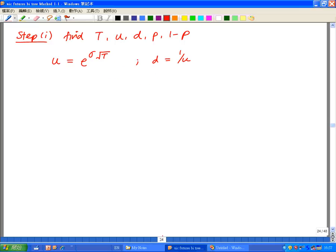And the next thing we need to do is d, which in this case is 1 over u. Here, there's two things I want to elaborate more on. For u and d, it's dependent on the volatility.